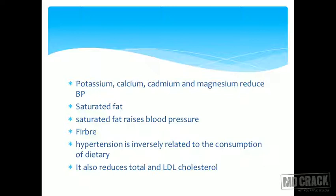Coming to the effect of saturated fat: saturated fat increases obesity and also increases blood pressure. Monounsaturated fatty acids and polyunsaturated fatty acids reduce blood pressure, whereas saturated fatty acids increase blood pressure. The role of fiber has also been increasingly debated. Fiber retards the absorption of glucose as well as fats, forms micelles and traps these substances in the intestine, and is therefore beneficial for hypertension as well as lipid profile. An increasing role of fiber is being noticed.